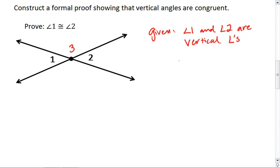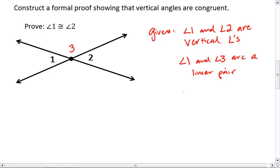We realize that this means that angle 1 and angle 3 are a linear pair, and angle 2 and angle 3 are also a linear pair. And that this is given in the diagram.